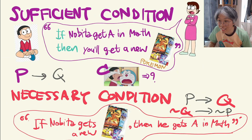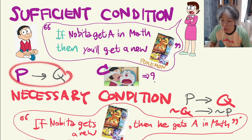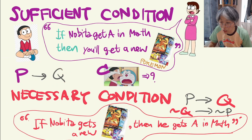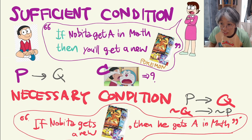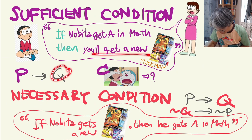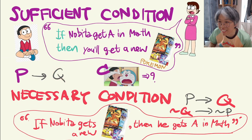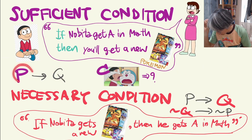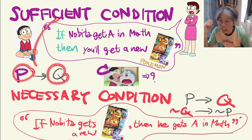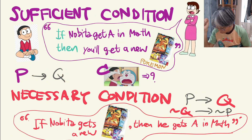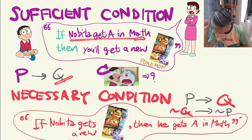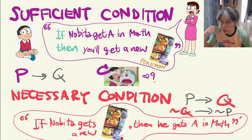This is in the format of a conditional statement P then Q, where P is the statement that Nobita gets an A, and Q is the statement that he gets a new card. We say that P is sufficient for Q, because once P is true — once he gets an A — you can conclude that Q is true: he will get a new card.